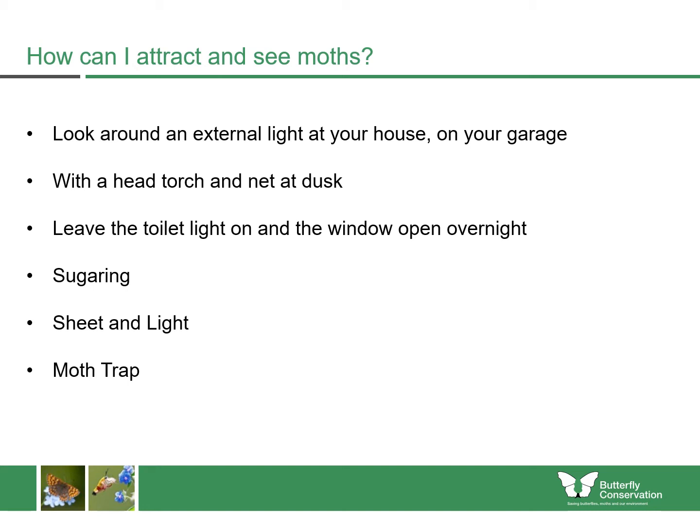Sheet and light is another very simple and cheap way of attracting moths. Using a bulb and a white sheet, moths will be attracted to the light shining on the sheet and many will land. You can also use a net to catch anything flying around, to have a look at them and identify them. A few clear pots that you can put the moths into will help with this.